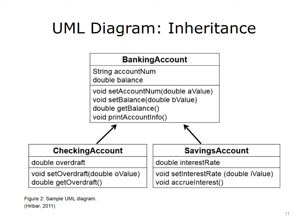In this example, both checking account and savings account have instance variables named accountNum and balance. But only checking account has an instance variable named overdraft — savings account does not have this instance variable. Similarly, the savings account class has an instance variable, interest rate, that the checking account class does not.